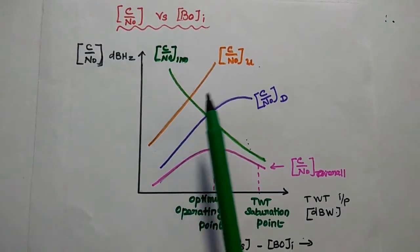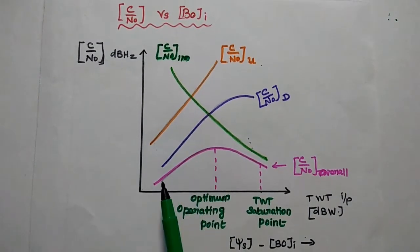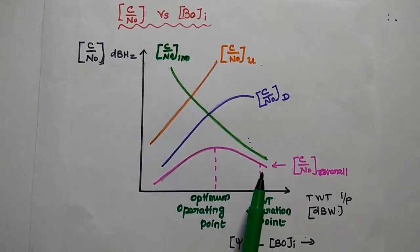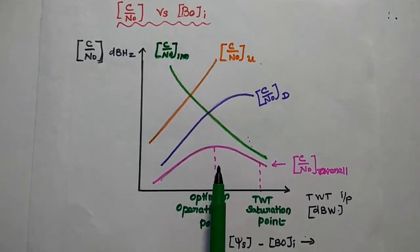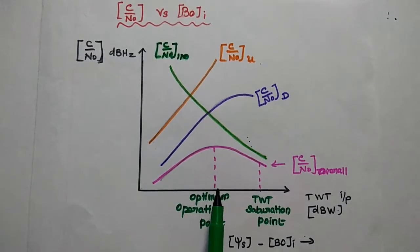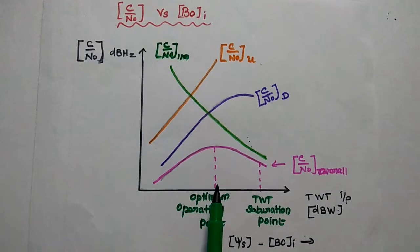At the same time, the uplink and downlink ratios are getting decreased. Here this is the overall response of these three links. At that point, we can get optimal point where all the carrier to noise density ratio are maximum.